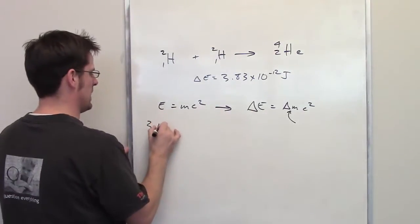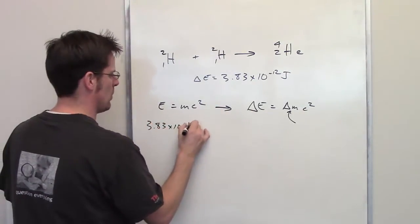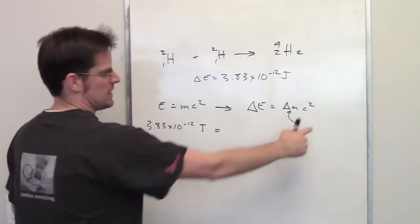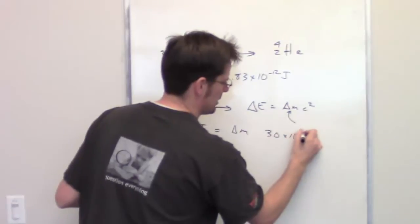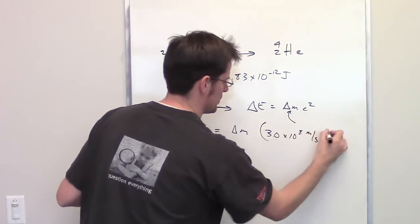Delta E is equal to 3.83 times 10 to the negative 12 joules. The speed of light, of course, is equal to 3 times 10 to the eighth meters per second. We're going to square that.